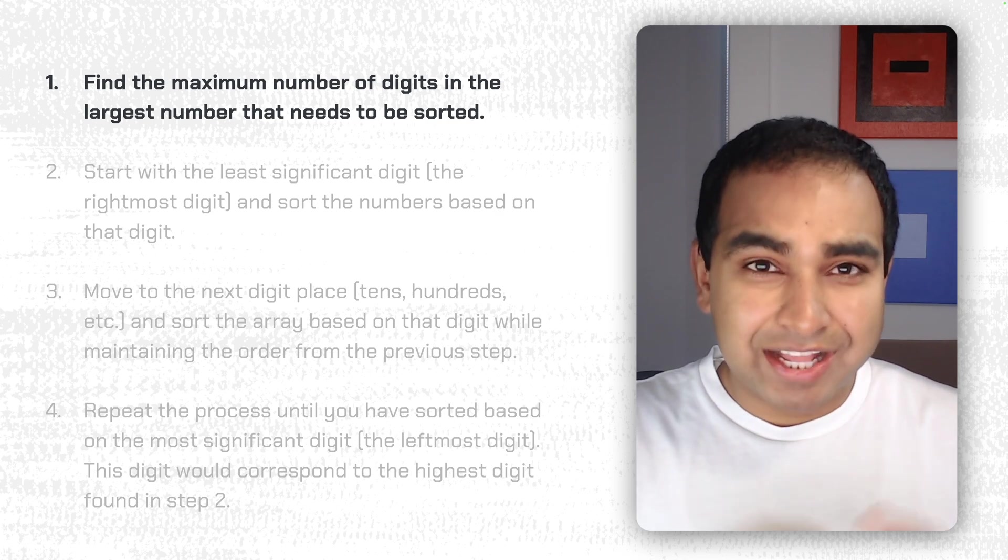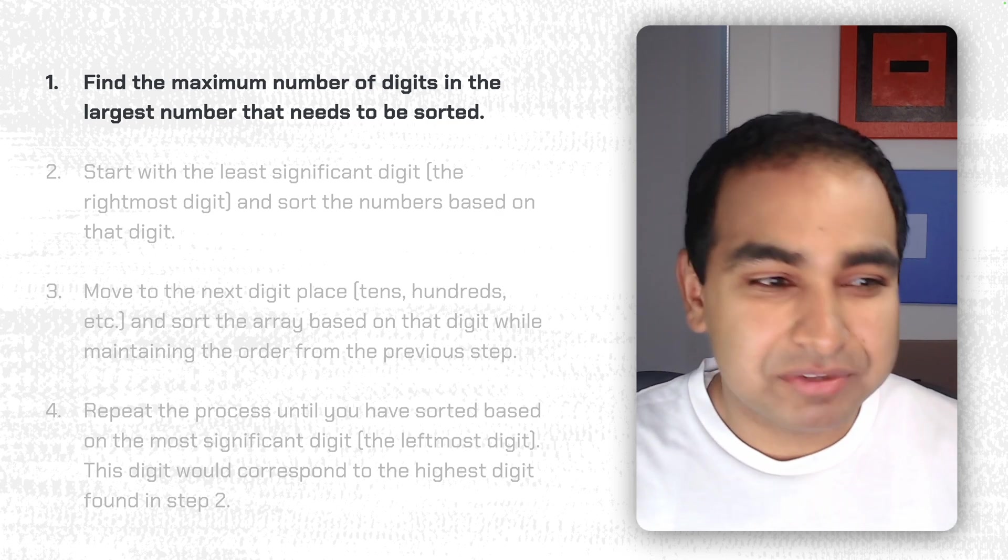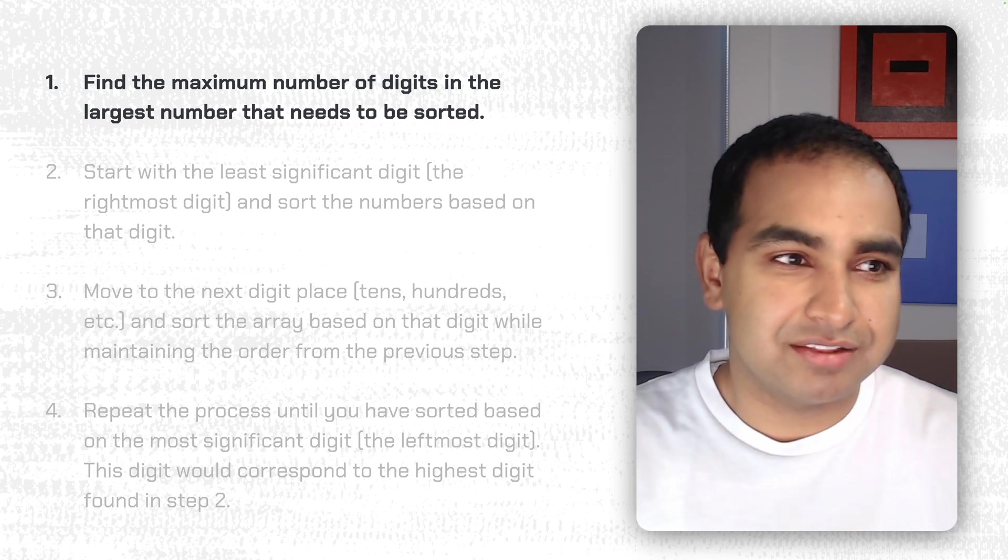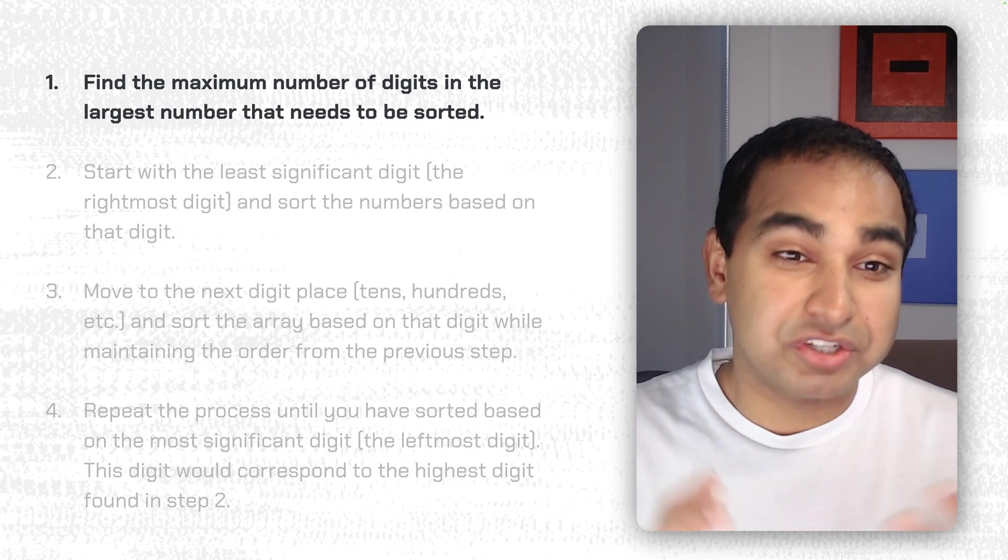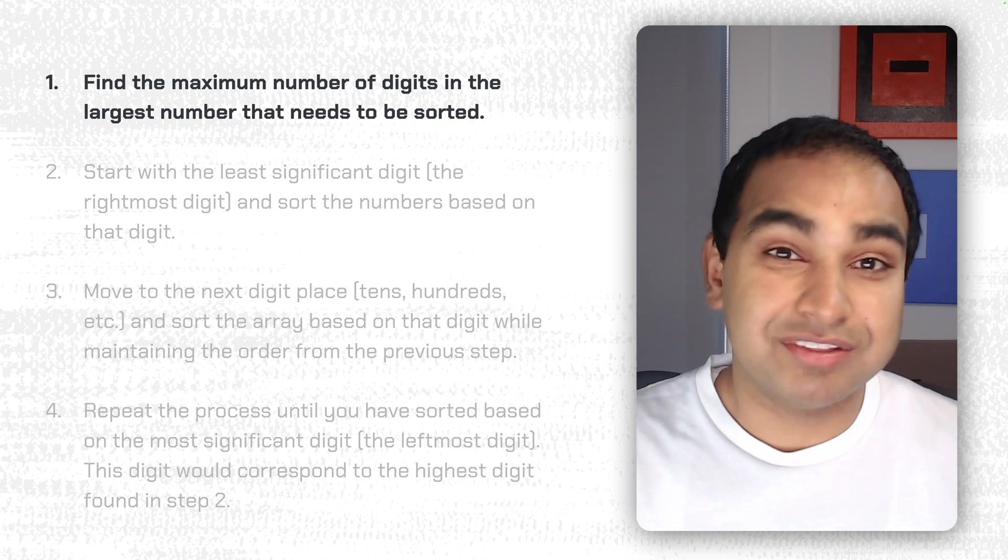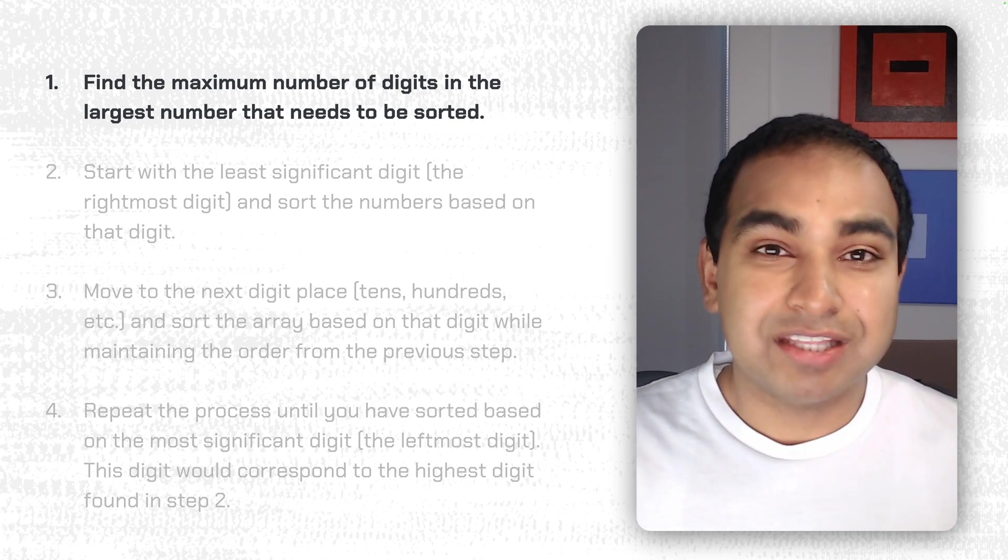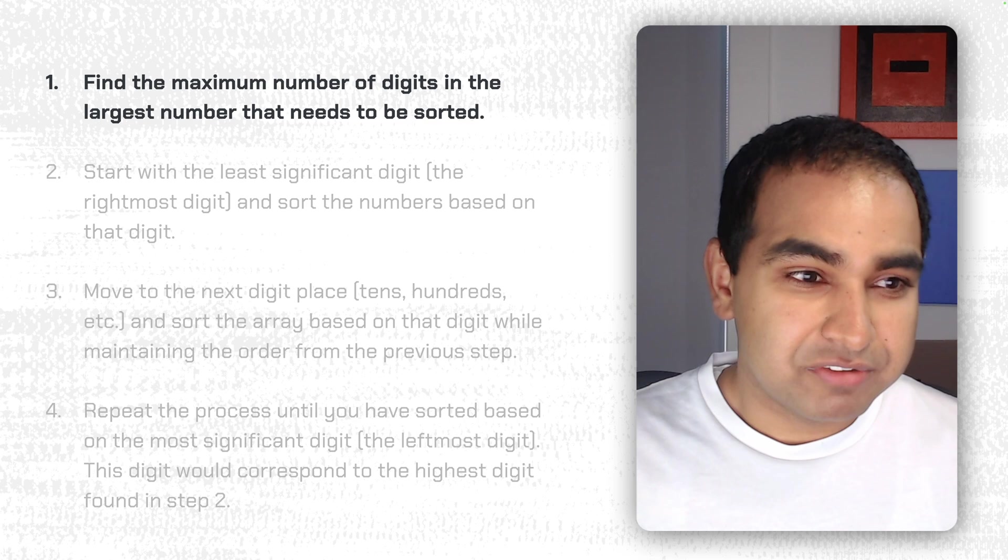Now, let's walk through the overarching algorithm and then look at an example that puts all of these steps into practice. So, the first step is to find the maximum number of digits in the largest number that needs to be sorted. So, we just did that. 2310 is the maximum number, and the number of digits in it is, of course, four.